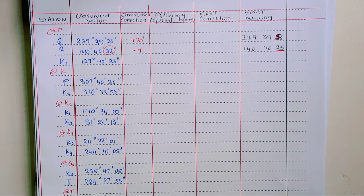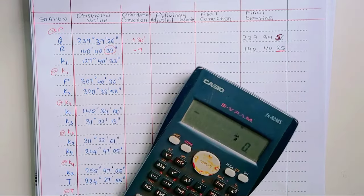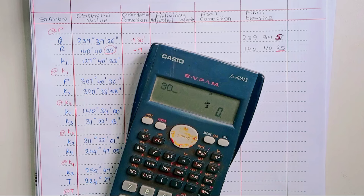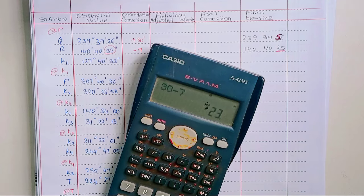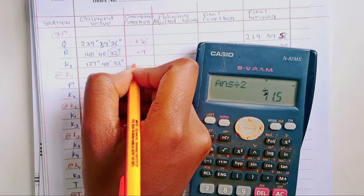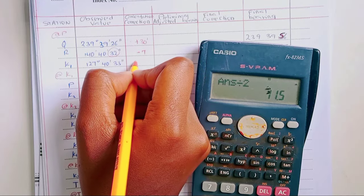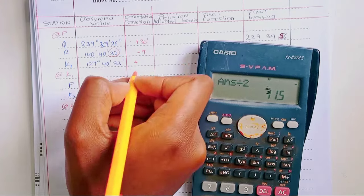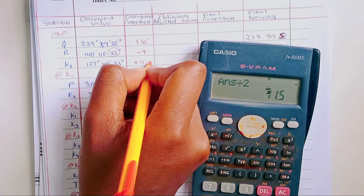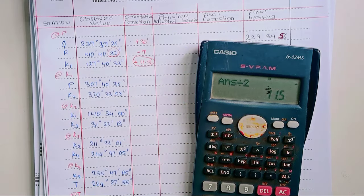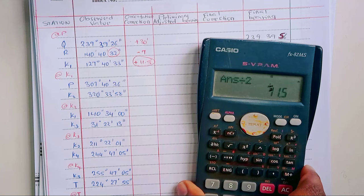We then find the mean of the orientation corrections for station P. We have plus 30 and minus 7, giving a sum of 23 seconds. Dividing by 2 gives positive 11.5 seconds. That 11.5 seconds is the orientation correction that will be applied to station K1.